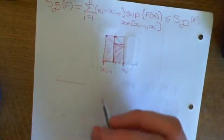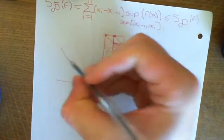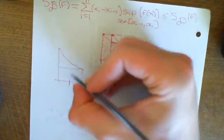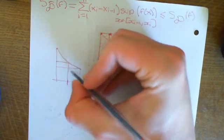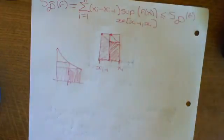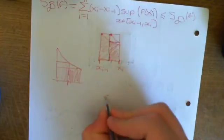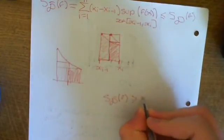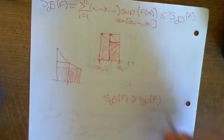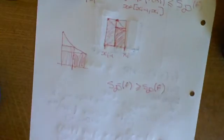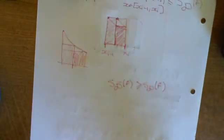For the lower Riemann sum, if you take the same interval and split it up, you'll have a higher infimum for part of it, so you're adding on more. Therefore, the lower Riemann sum over a refined dissection of f is greater than or equal to the lower Riemann sum over the unrefined dissection of f.